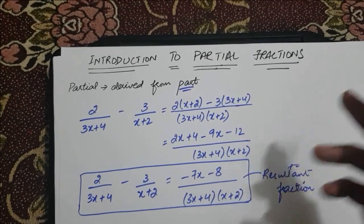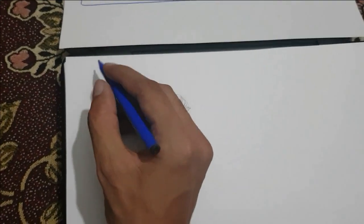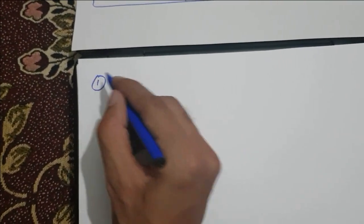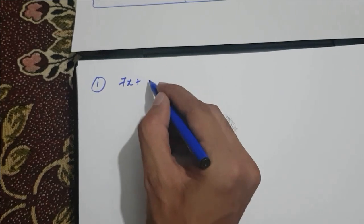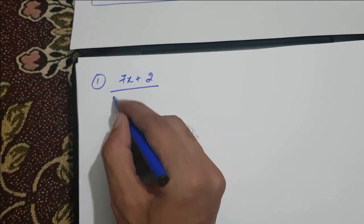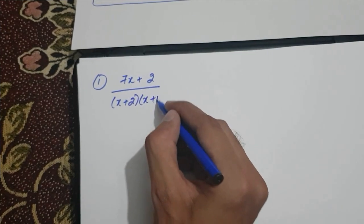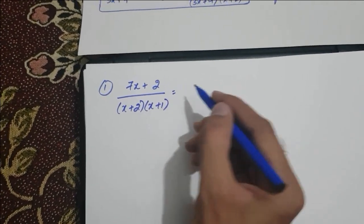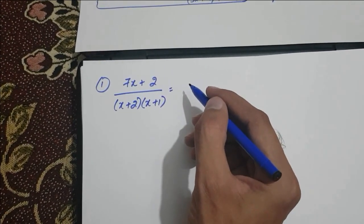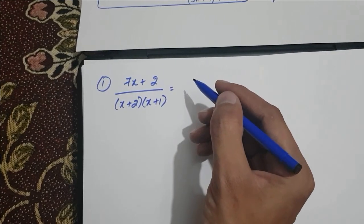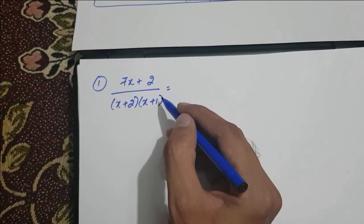To study this, let's say we move on to another example. That is, 7x plus 2 over x plus 2 multiplied by x plus 1. This is the resultant fraction.